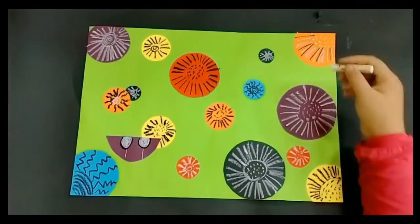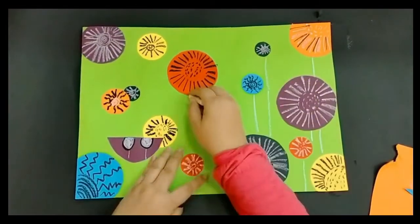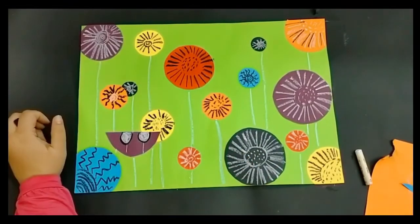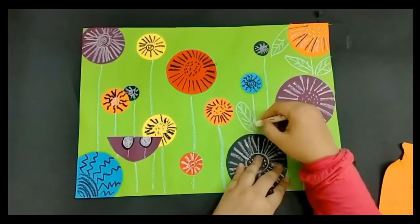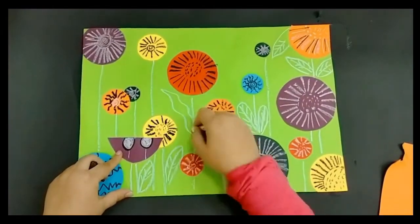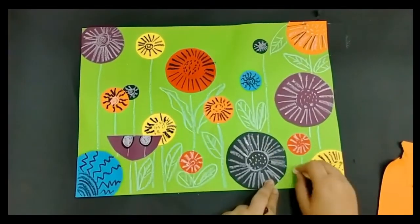Once you're happy with how your flowers look, we're going to add stems extending to the bottom of the paper for each flower. Some stems may go behind other flowers, overlapping them in order to reach the bottom of the paper.